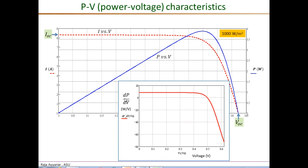Here I have plotted the rate of change of power with respect to voltage, dP/dV, for voltages ranging from zero up to VOC. The dP/dV is positive and constant initially, leading to the linear increase in power. It begins to reduce after a certain point, and exactly at the point where dP/dV equals zero, the maximum power occurs. After this point dP/dV is negative and the power decreases as voltage continues to increase.